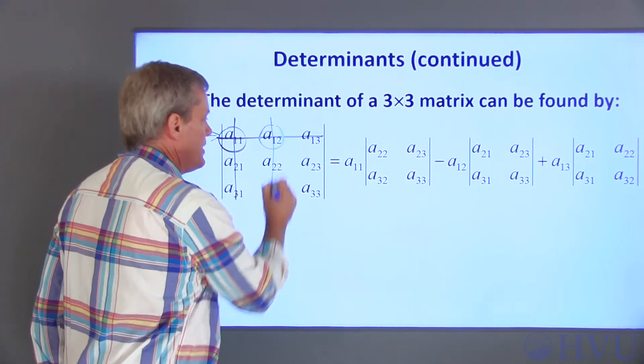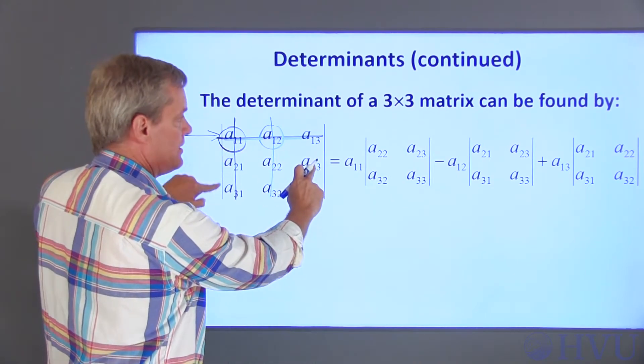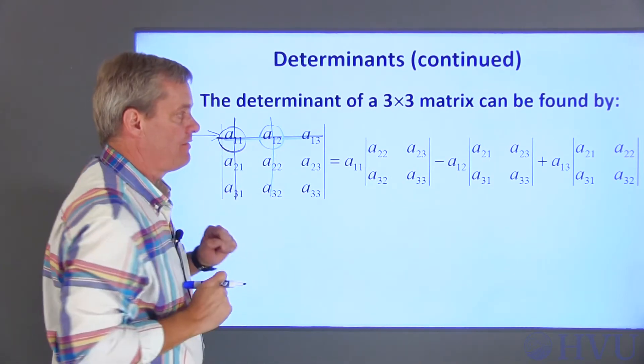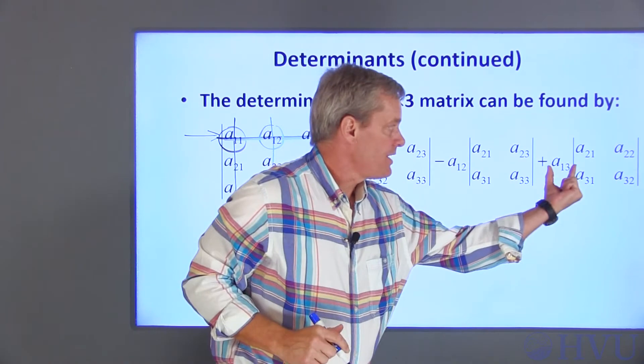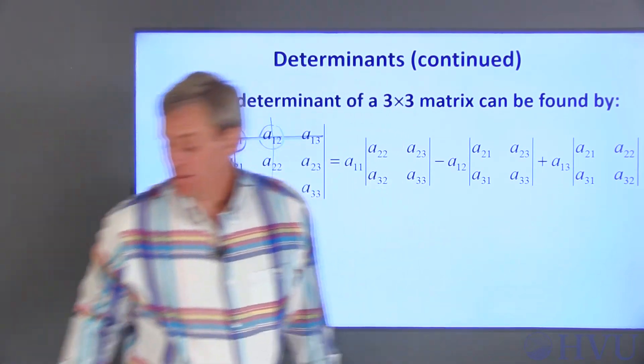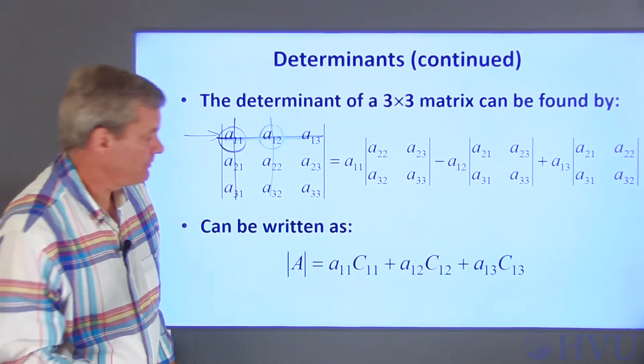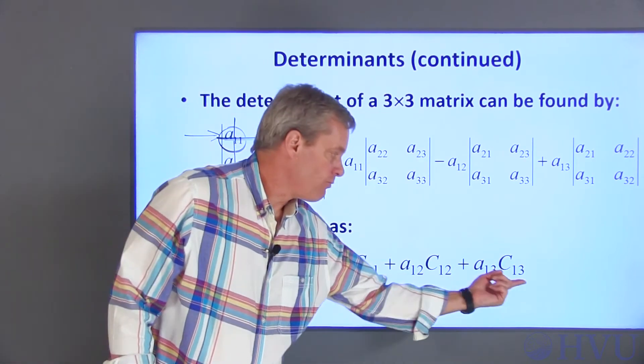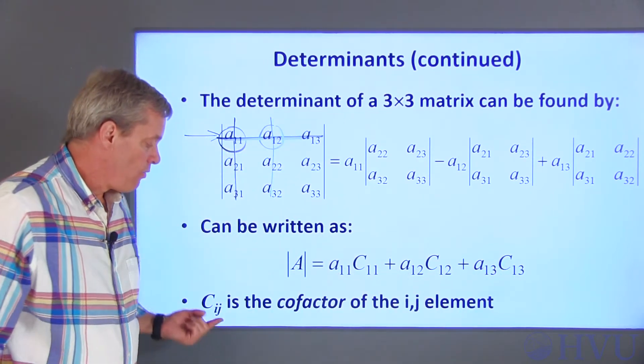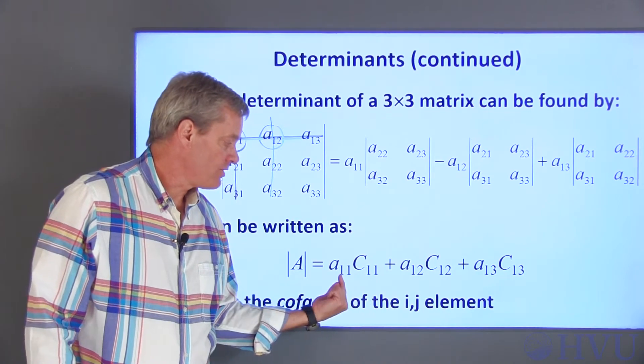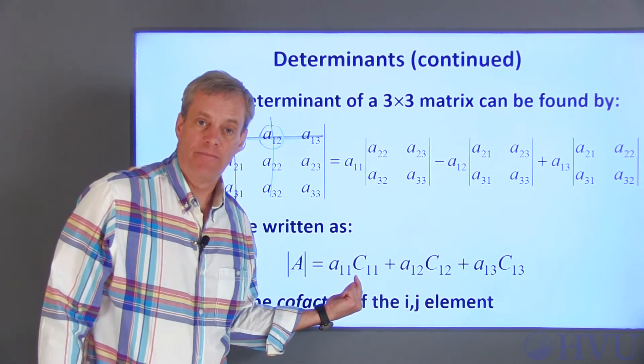So A12, its cofactor is A21, A23, A31, and A33. Then plus A13 and its cofactor. This can be compactly written this way where C sub ij is the cofactor of the i-th and j-th element of the matrix.